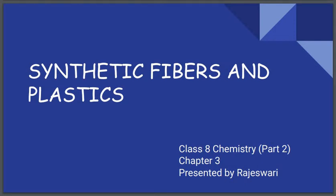Good morning children, welcome back to the chapter Synthetic Fibers and Plastics. Before we start, let's recollect what we studied in the last class. Fibers are threads or filaments from which textile is formed. There are two types: natural fibers and synthetic fibers. Natural fibers are obtained from plants and animals and are biodegradable — they can be decomposed by the action of bacteria and other living organisms. In this module we are going to discuss synthetic fibers.